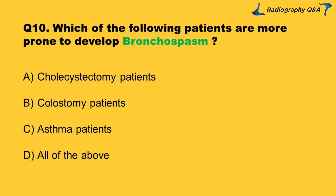Question 10: Which of the following patients are more prone to develop bronchospasm? Option A: cholecystectomy patients. Option B: colostomy patients. Option C: asthma patients. Option D: all of the above. Right answer is Option C.